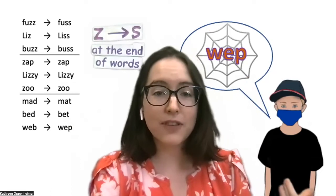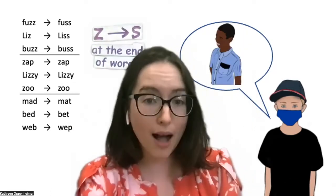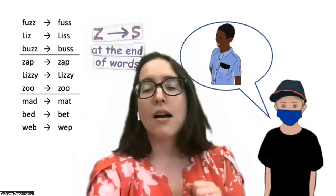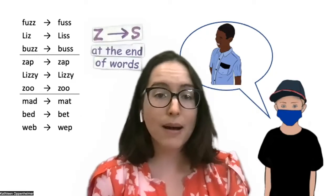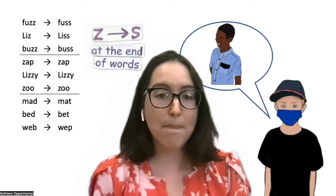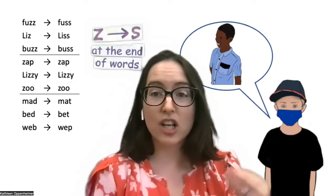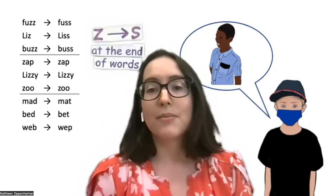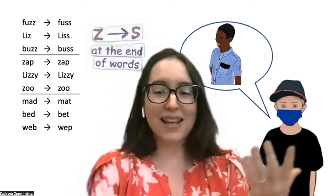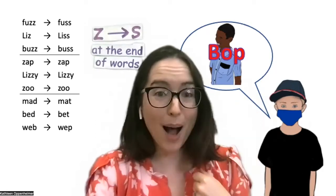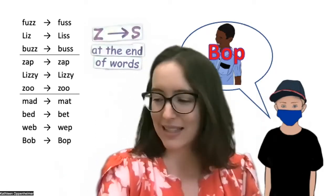So we add that to our list. And finally, we ask him about his friend Bob. I ask the students to make a prediction about how Billy will say Bob. Some kids suggest "pop," some kids suggest "bop." And it's "bop." So we add that to our list.